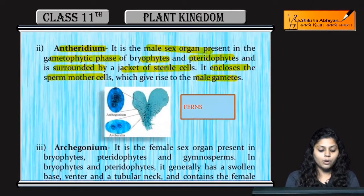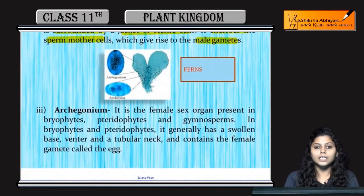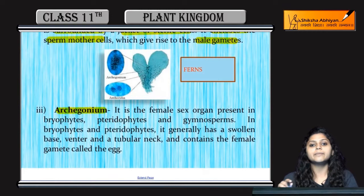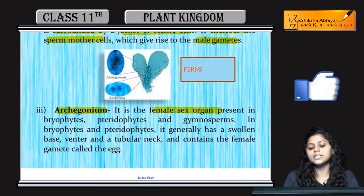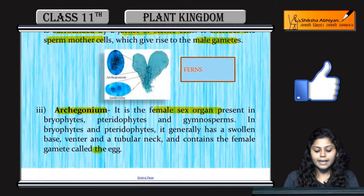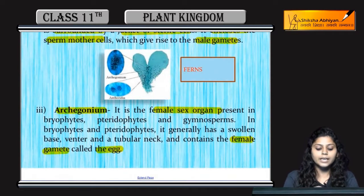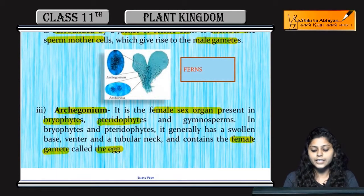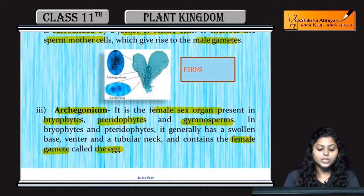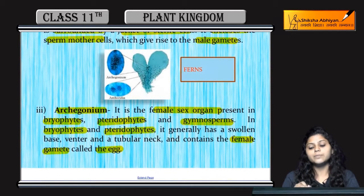Next, talking about the Archegonium. Antheridium is a male reproductive organ, whereas Archegonium is a female sex organ. It produces eggs and female gametes. It is found in bryophytes, pteridophytes, and gymnosperms.